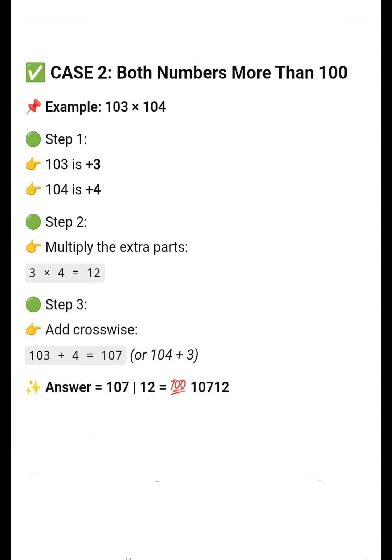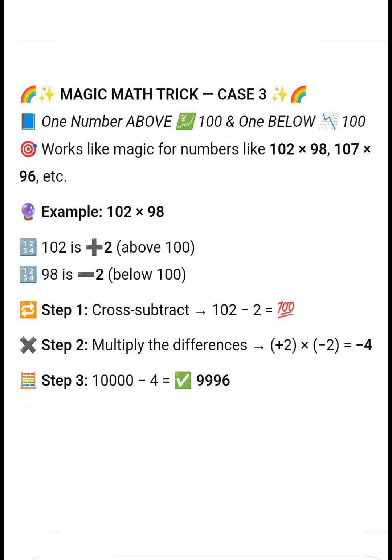So answer is 10712. Case 3, 1 above and 1 below 100. Example, 102 x 98. Here, 1 number is plus 2 above 100 and 1 number is minus 2 below 100.